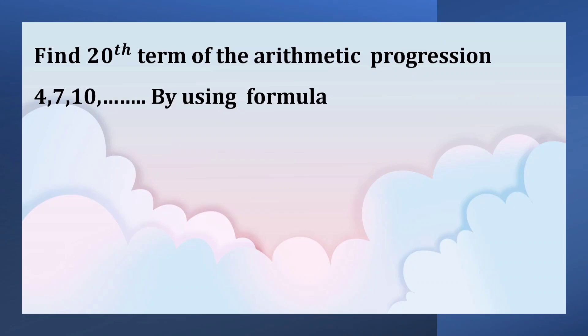Find the 20th term of the arithmetic progression 4, 7, 10, ... by using the formula. The formula to find the nth term of an AP is An = a + (n-1)d.